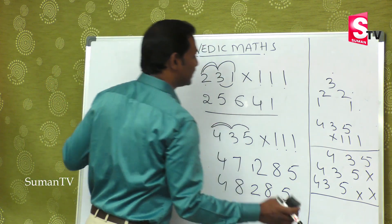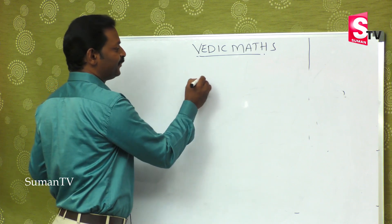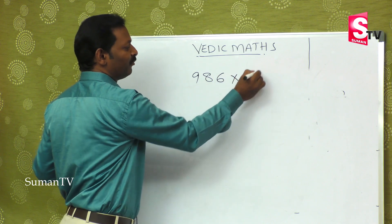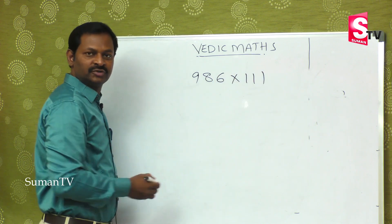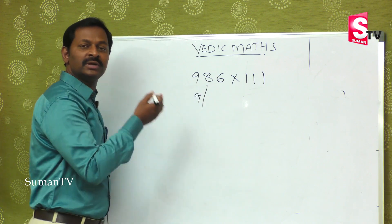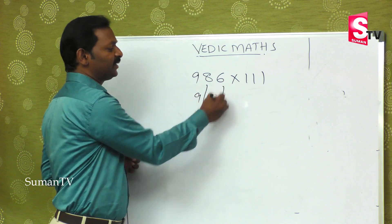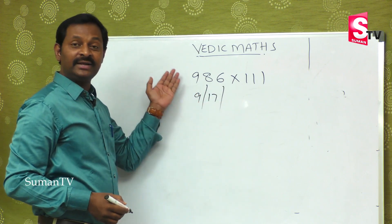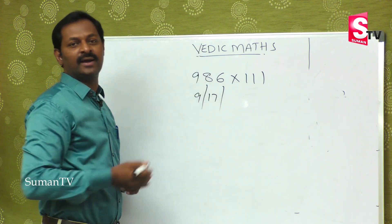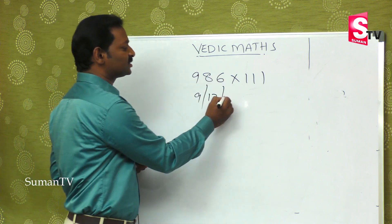Let's take one more example. Suppose 986 is multiplied by 111. The 1st digit is 9. I will put a slash because the balancing rule applies. 9 plus 8 is 17. Then 17 plus 6, because we consider positions 1, 2 and 1, 2, 3. So 9 and 8 is 17, and 17 plus 6 is 23.